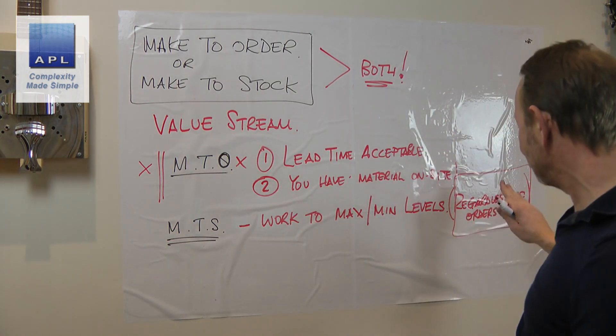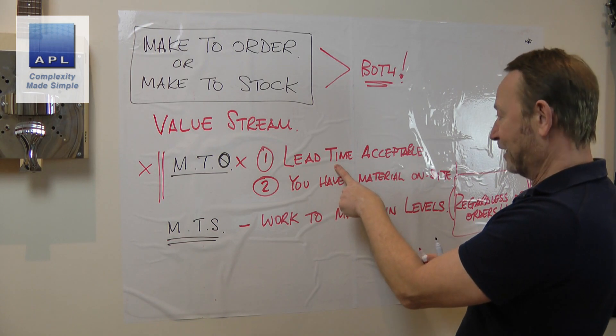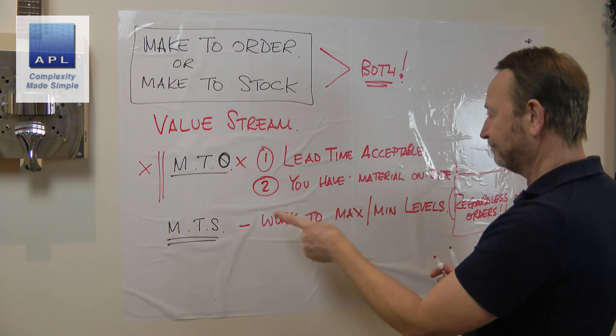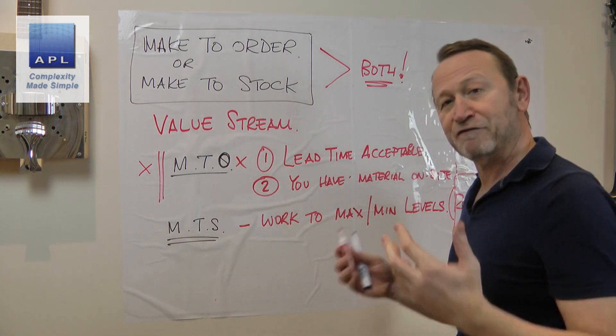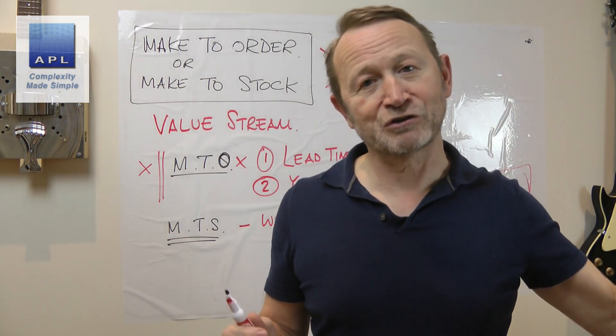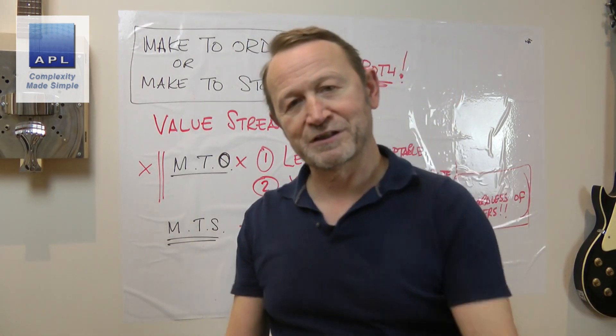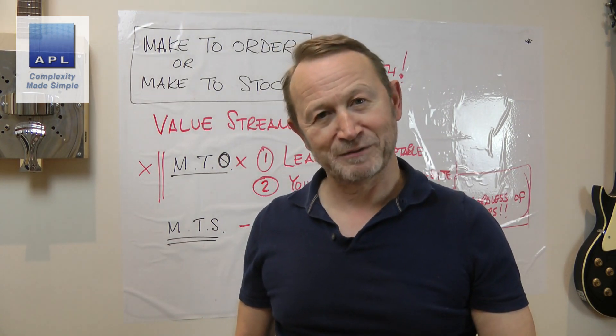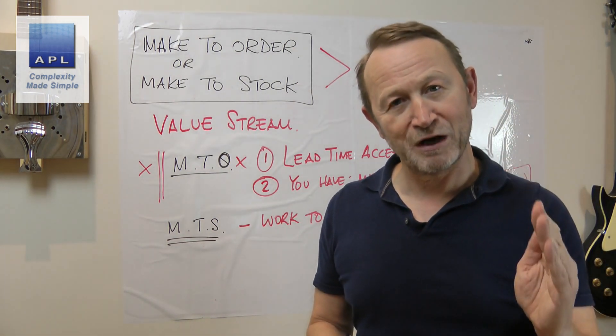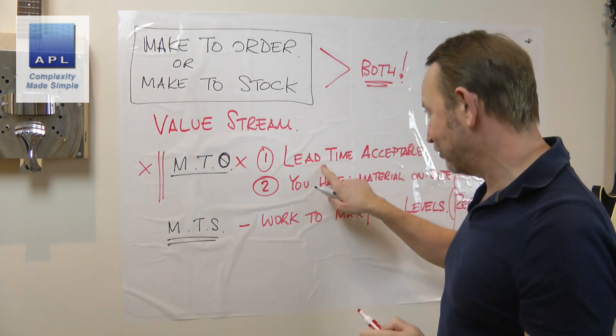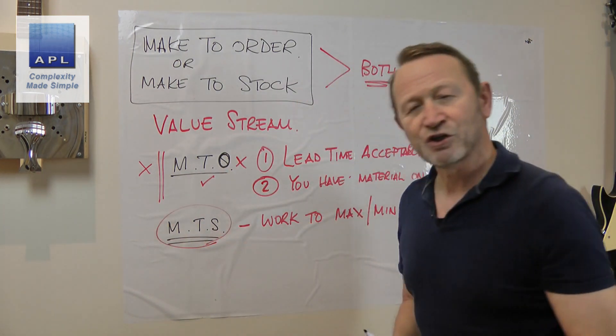Make to stock is working to maximum-minimum levels regardless of the orders that are coming in. You're doing this because your lead time is not acceptable, and you might also do it because maybe you don't have material on site. So you keep finished goods on site, but maybe you keep less raw material on site. You supply the customer, customer's now happy. You buy raw material to take the minimum back to the maximum. You work to maximum-minimum levels, but here's the point: you can't do both. You have to decide. If this is acceptable, you can make to order. If this is not acceptable, you have to make to stock, and you always have to make to stock regardless of the orders.